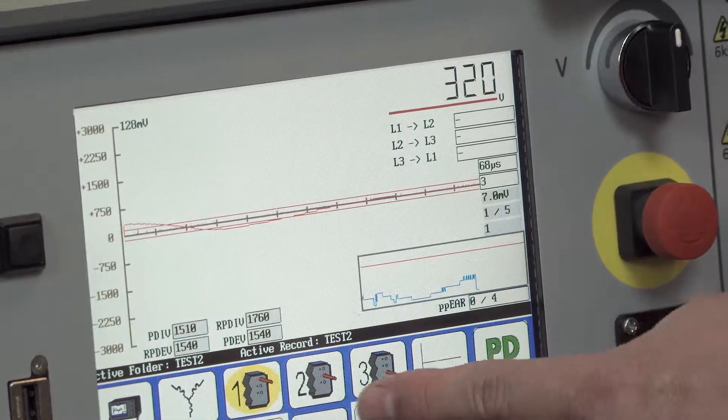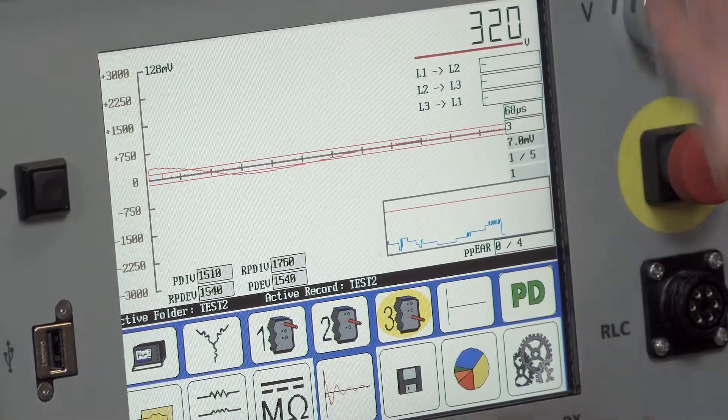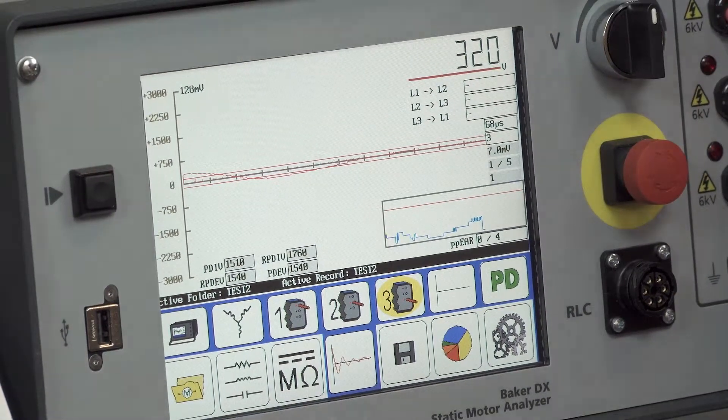And then we would proceed on with lead two in the same manner. Once complete, we would do lead three and we would record all the partial discharges for each of the phases of the motor.